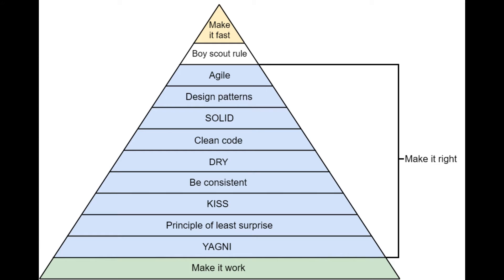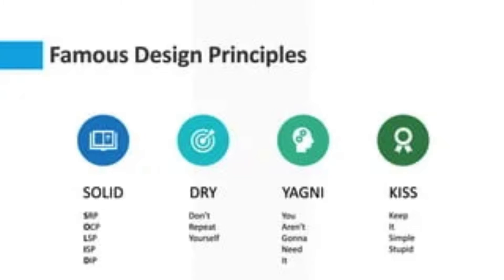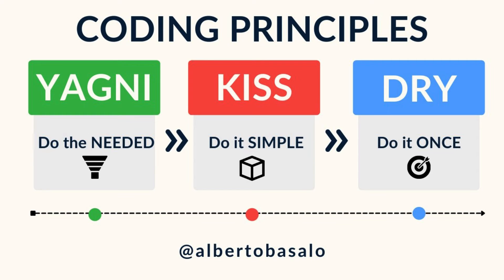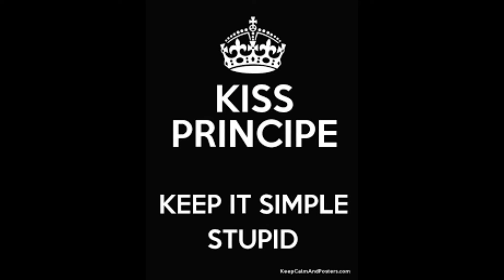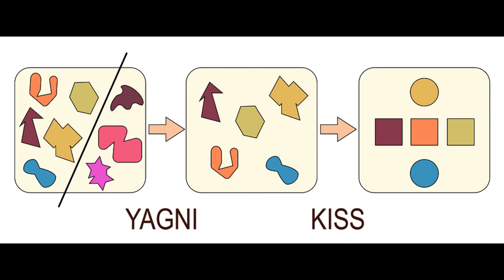Key aspects of the KISS principle include: Simplicity — strive for straightforward and uncomplicated solutions rather than complex and convoluted ones. Clarity — make your designs, code, or documentation as clear and easy to understand as possible. Avoid unnecessary jargon or complexity that might confuse users or developers.